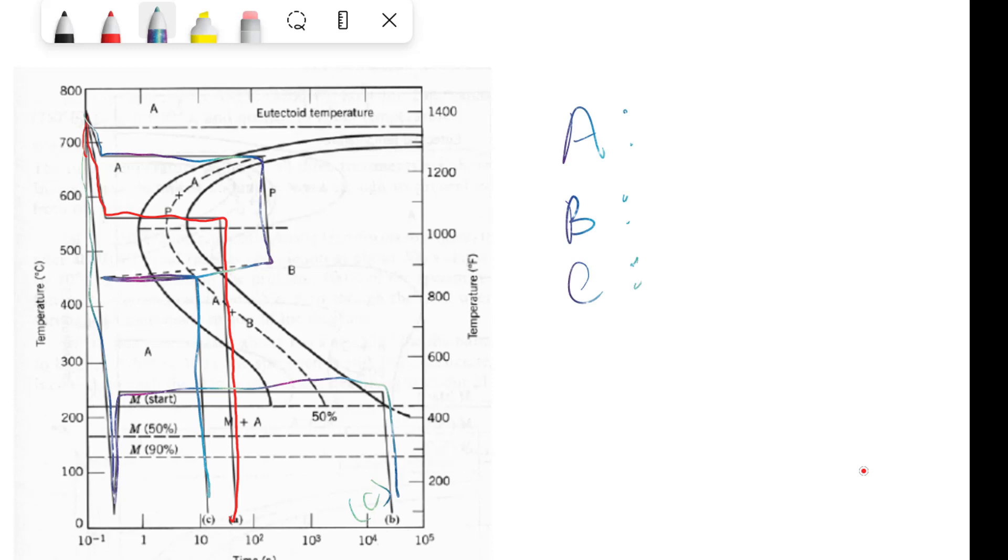If you see case A, that is the red one, we are cooling it at somewhere in the temperature zone of like 550 or 560 degrees centigrade. This is the temperature which is above the nose, and here we are allowing it to transform to complete perlite.